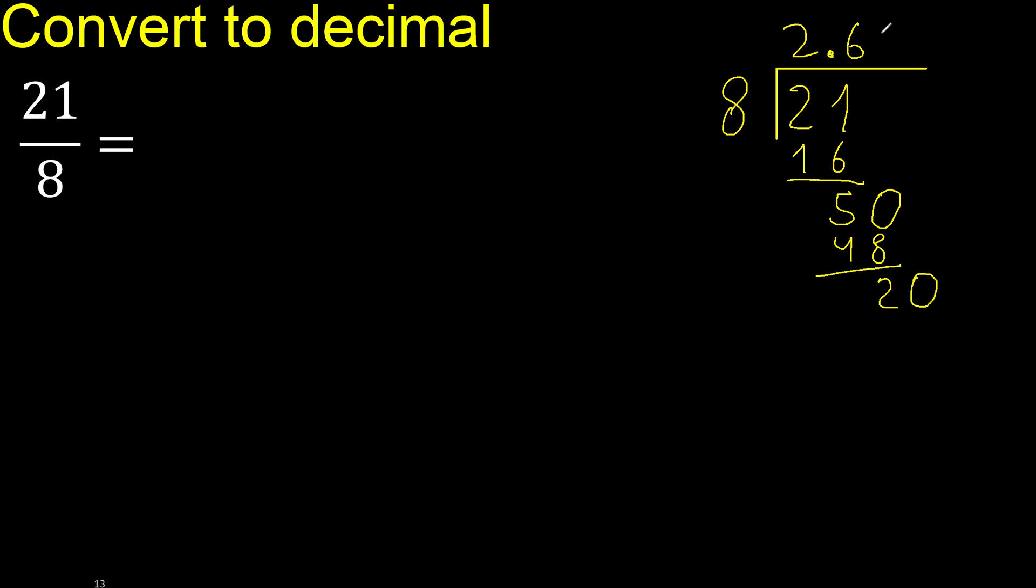8 multiplied by 3 is greater. Multiplied by 2, 16. 20 minus 16 is 4.